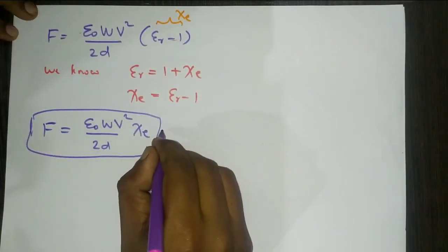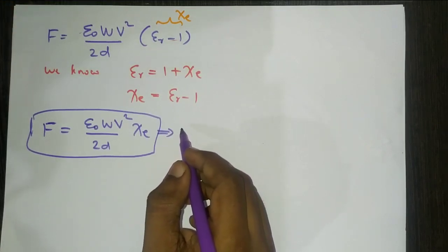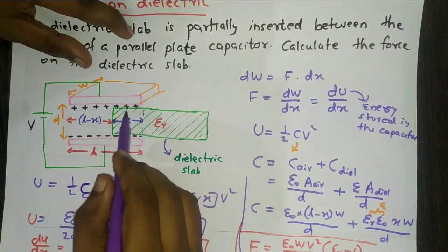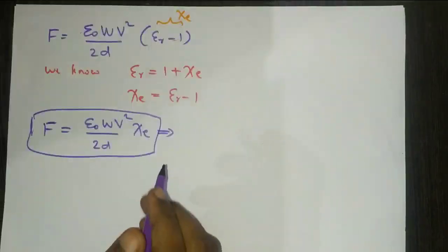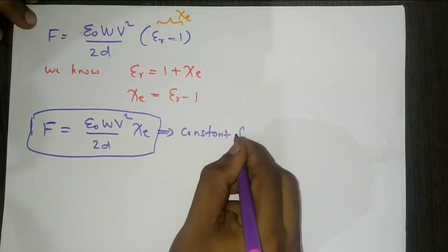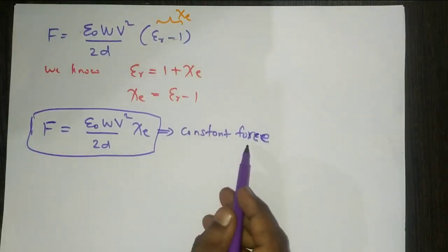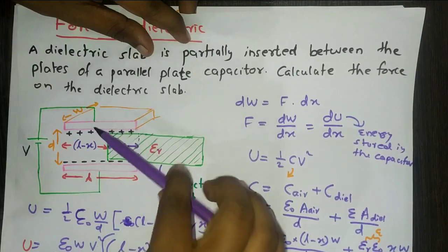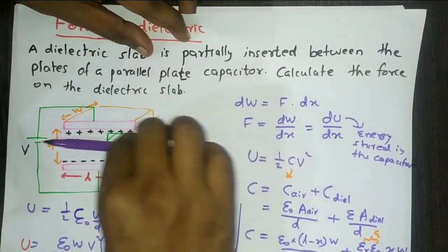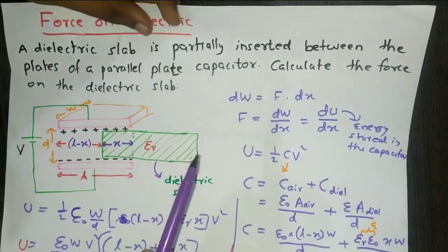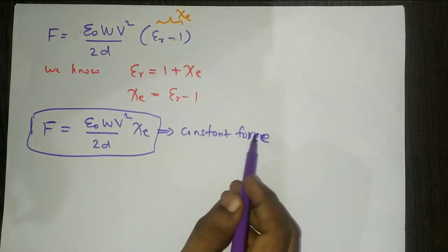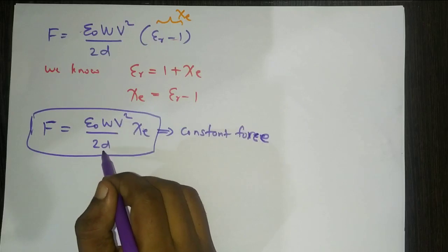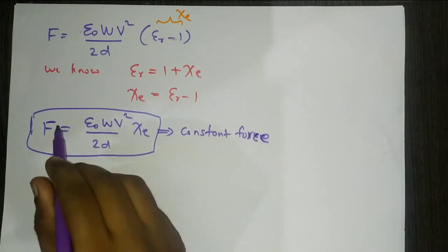This is the constant force experienced by our dielectric material when placed in the gap between the capacitor plates. Since the force is constant, the acceleration will also be constant — that means our dielectric slab moves with uniform acceleration, provided the slab surface is smooth. It can also be noted that since everything — V (the potential difference applied between the capacitor plates), W, and d (separation between the capacitor plates) — is constant, therefore the force is constant.